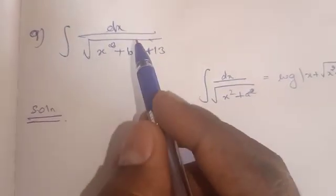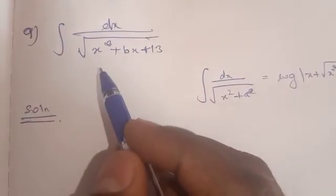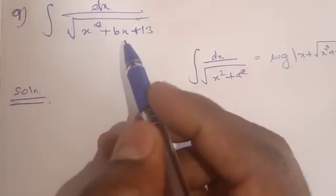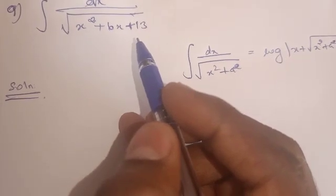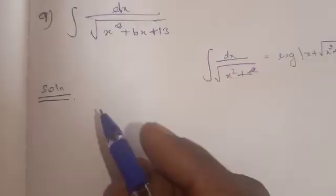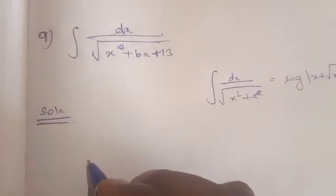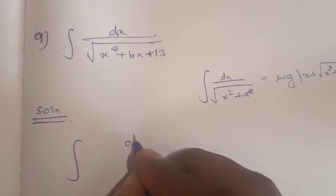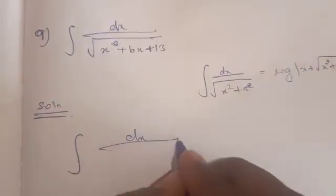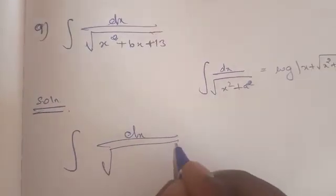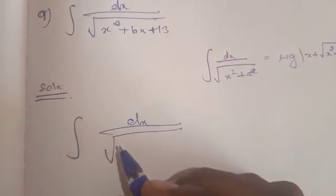9th sum. Integral dx divided by square root of x squared plus 6x plus 13. Solution: integral dx divided by square root of x squared plus 6x plus 13.